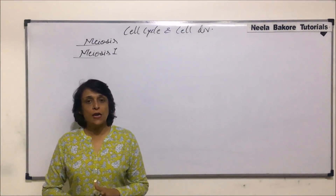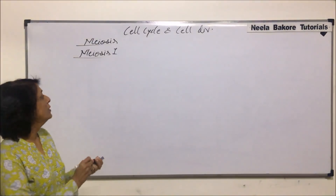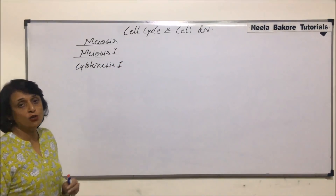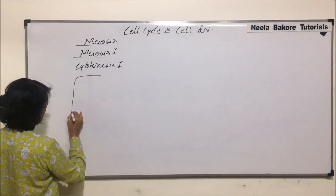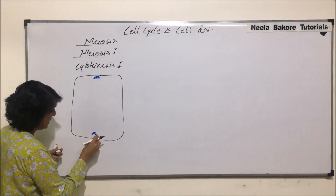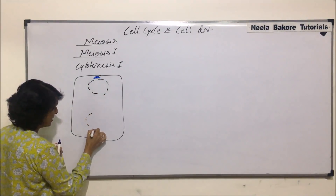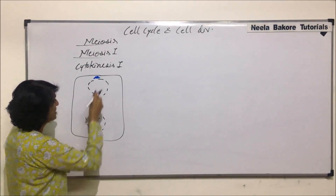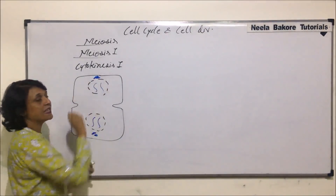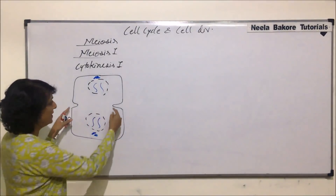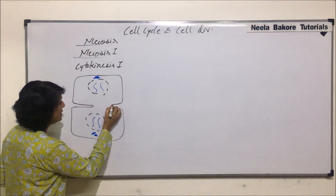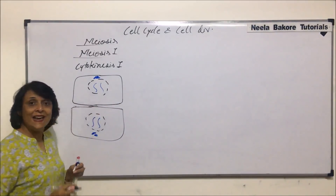In the previous part, we saw the changes till telophase 1. Now the cell undergoes cytokinesis 1, meaning the cytoplasmic content is going to divide. The cell from telophase 1 was showing two nuclei, with centrioles at two poles. Each nucleus had two chromatins, and cytokinesis had begun by the end of anaphase or beginning of telophase. In an animal cell, the constrictions in the plasma membrane get deeper and deeper until the cytoplasmic content also divides.